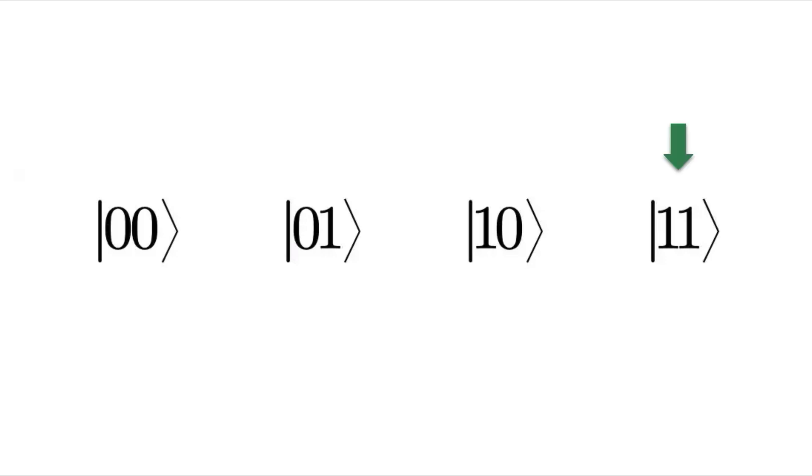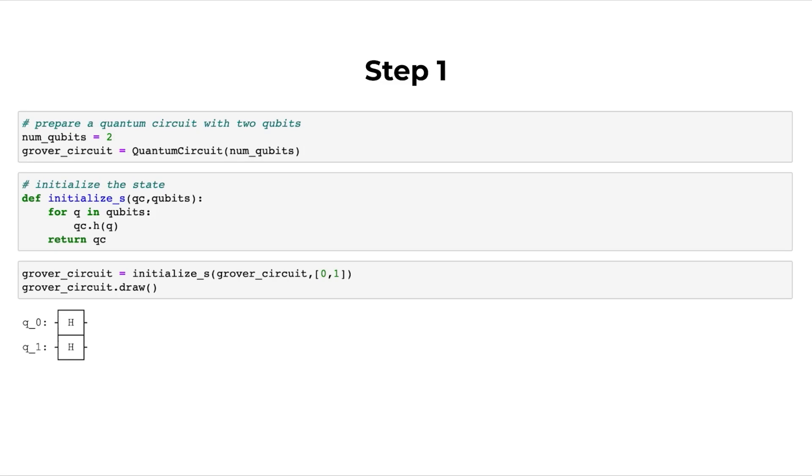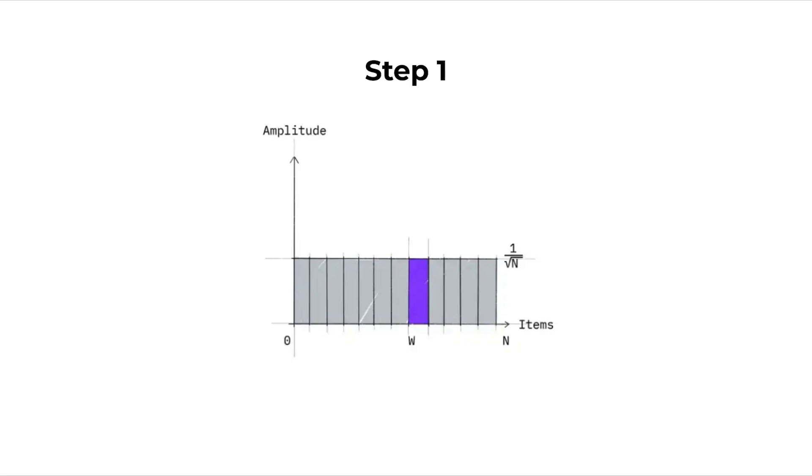After importing all the required libraries, our code starts off by creating the quantum circuit and initializing it by forming something called uniform superposition, which is simply a special state we'll consider. This is done through applying what's known as Hadamard gate on the qubits. Graphically, the state of our problem currently looks like this. All values are the same in height, so think of it like they all have the same probability of being measured as a winning state currently.